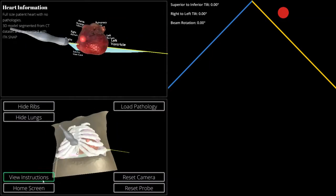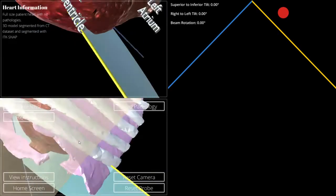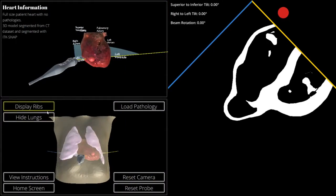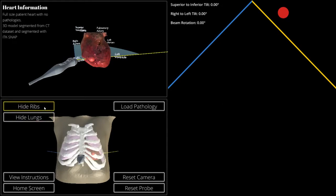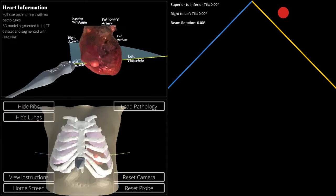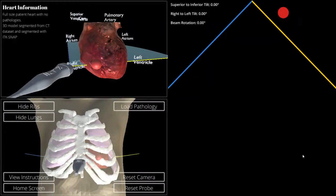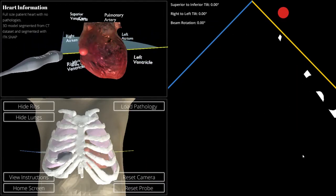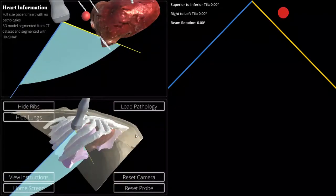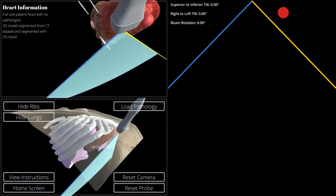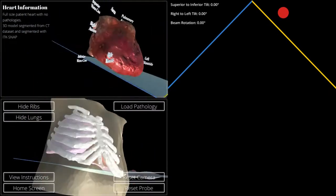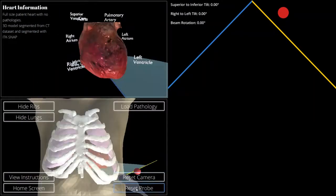At any time, you can back out to the instruction screen or home screen. If you ever lose your way, like if you're zoomed in too far, you can reset the camera. We can also turn the ribs on and off. But for the time being, we're going to keep it on to keep the simulation as realistic as possible. The probe moves as you would expect in 3D space, and if we rotate the chest, you'll see that the probe follows the contours of the body quite smoothly and will not fall off.